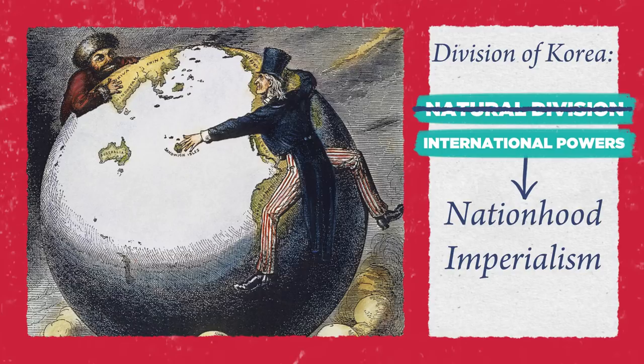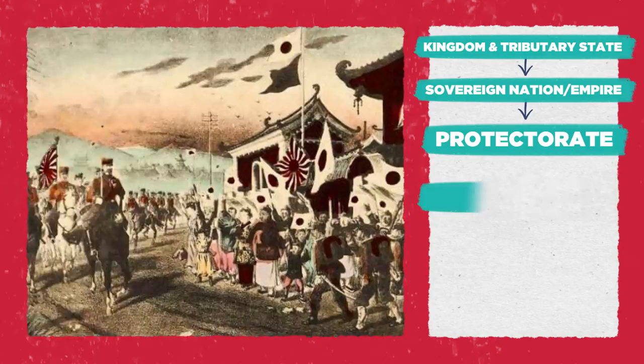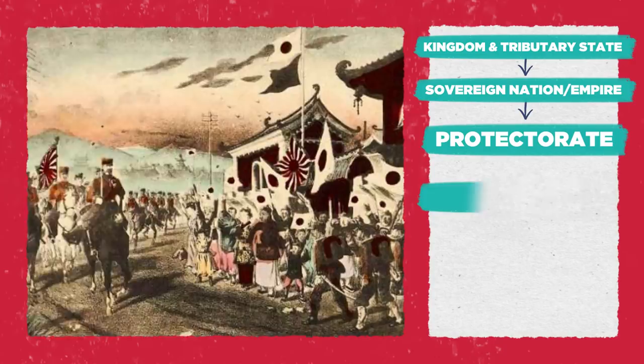If we follow this rough timeline correctly, Korea went from kingdom and tributary state, to sovereign nation and empire, to protectorate, to annexed region, to falling under US and Soviet influence and a trusteeship, to independence — all within a few short decades. That's an extremely rapid and varied change in status for a country to go through. And most of these changes in status are centered around wars Korea wasn't directly waging, and economic negotiations between other, larger nations.